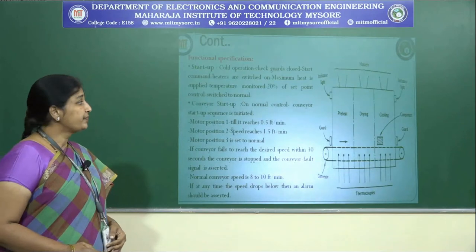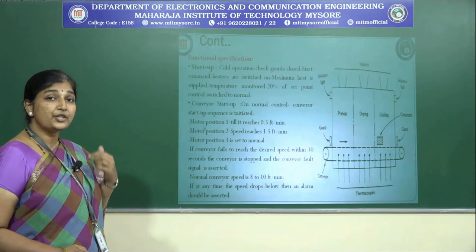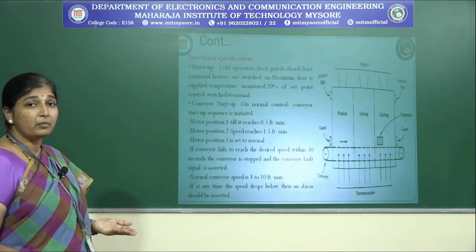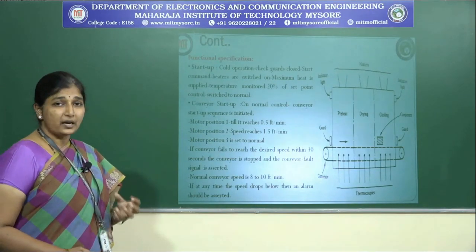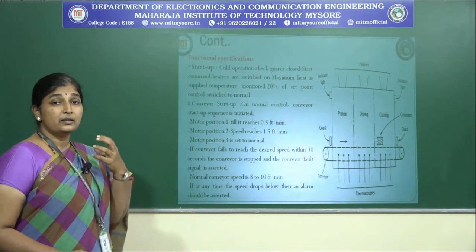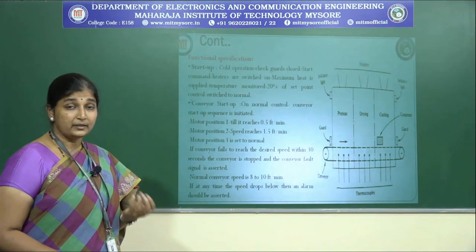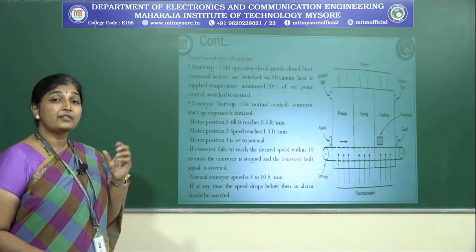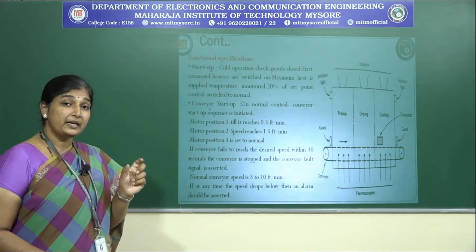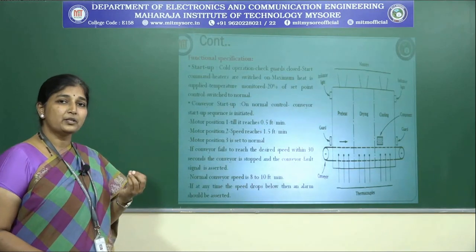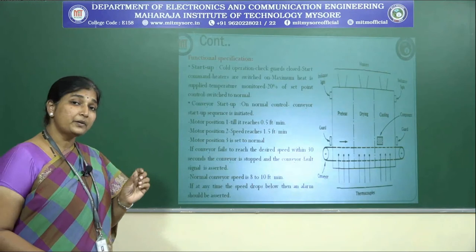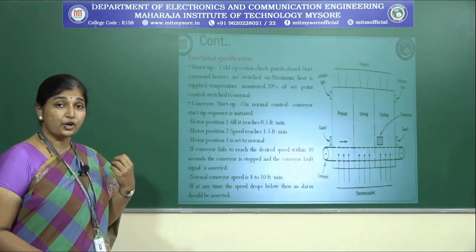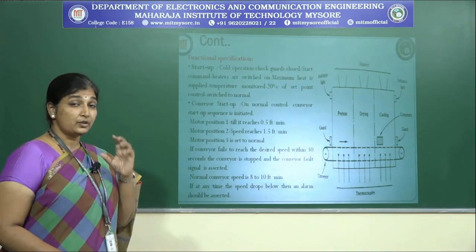Regarding the functional specification: if 20% of the set point temperature is achieved, the switching is considered normal. When initially starting the drying oven, the system is cold and must be preheated. Preheating requires only about 20% of the expected temperature. Once that 20% is achieved, the preheating is set and you can start placing components on the conveyor belt.